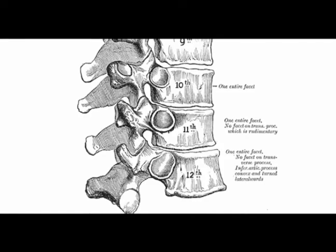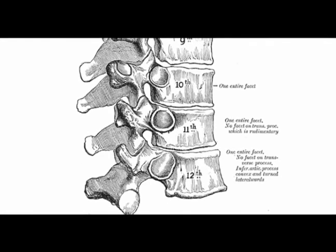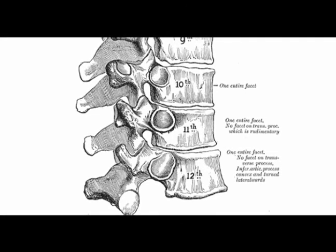T11 and T12 are atypical in that they contain a single pair of whole costal facets that articulate with the 11th and the 12th rib respectively. T11 and T12 lack facets on their transverse processes.